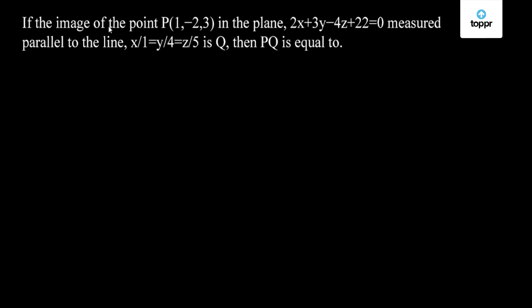Hi guys, the question states that if the image of the point P in the plane 2x plus 3y minus 4z plus 22 equal to 0